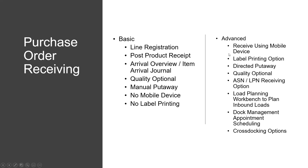The advanced is using mobile devices, whereas with the basic out-of-the-box standard inventory control purchase order receiving, there is no label printing and there are no mobile devices or scanning.